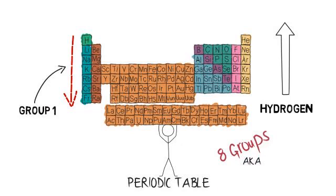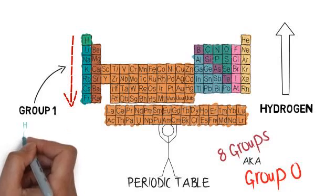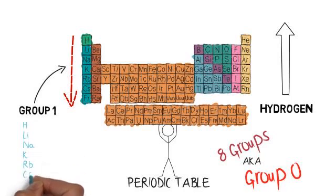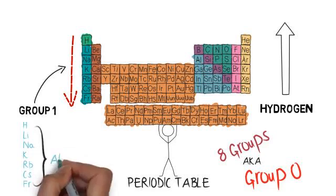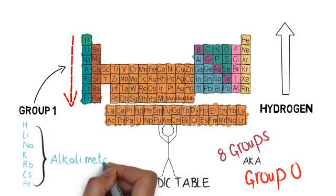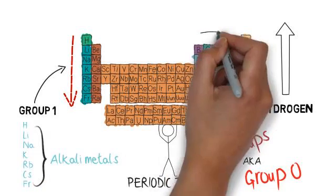Group 1 is known as alkali metals and group 8 or 0 are called the noble gases. The periods which run horizontally across represent the highest unexcited energy level for an electron in that element.